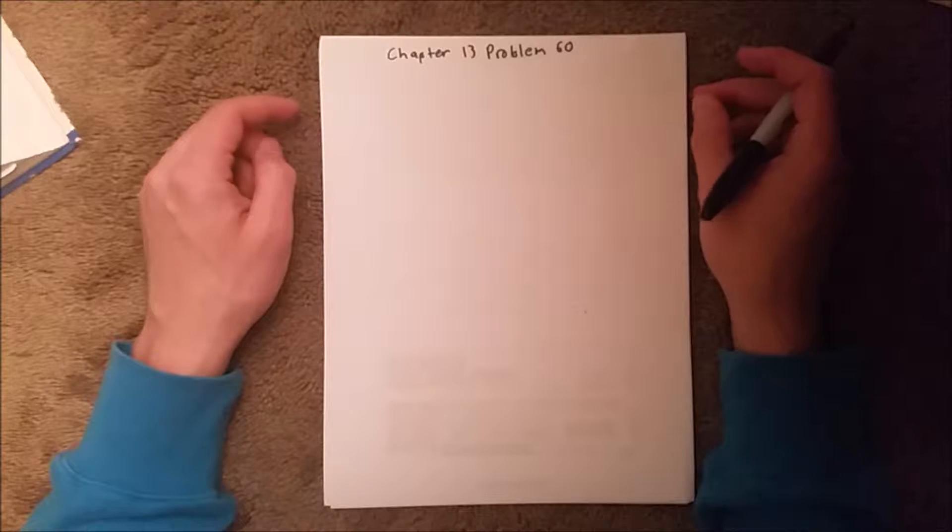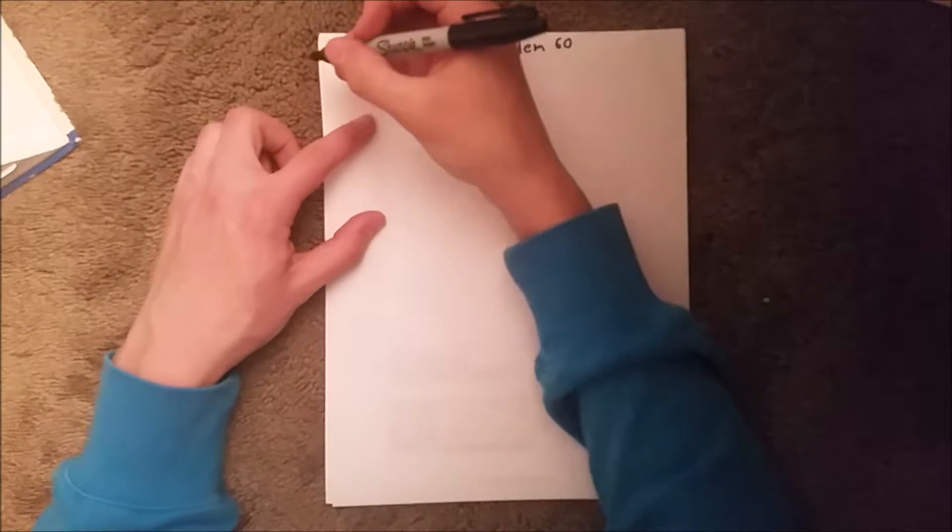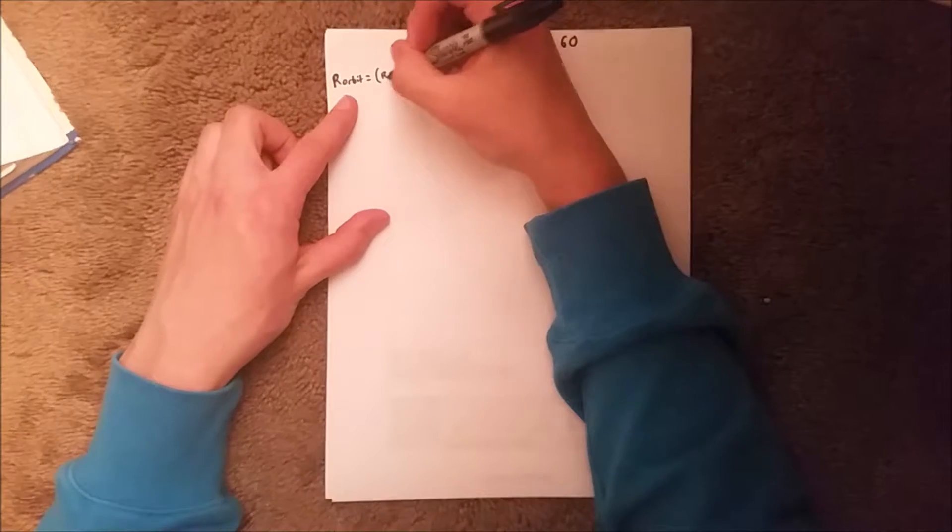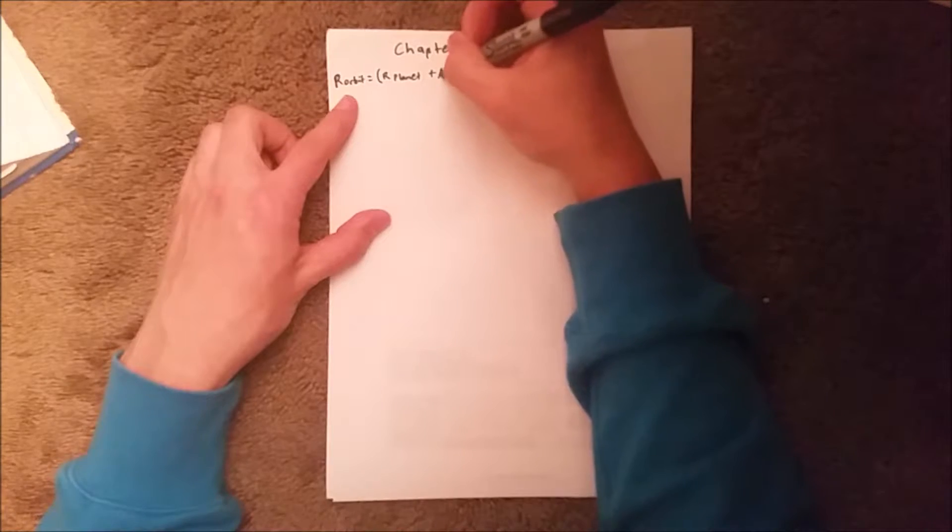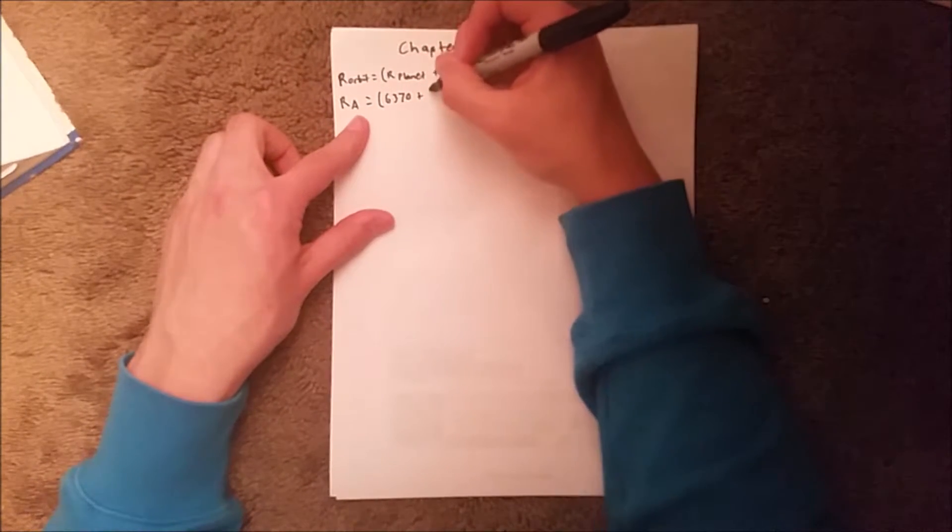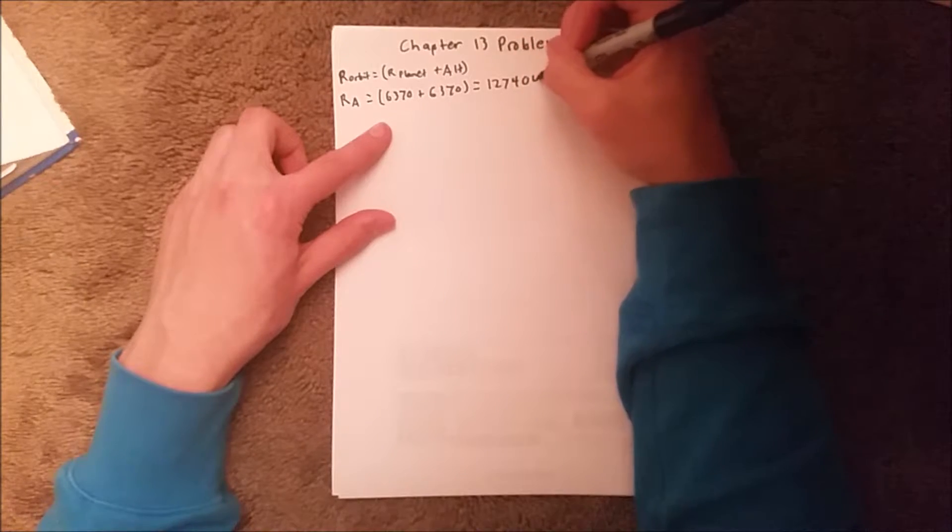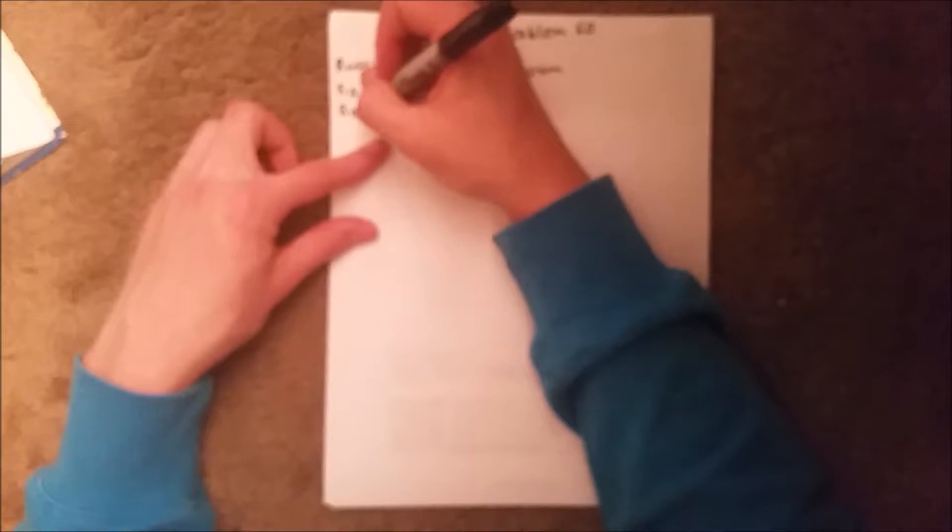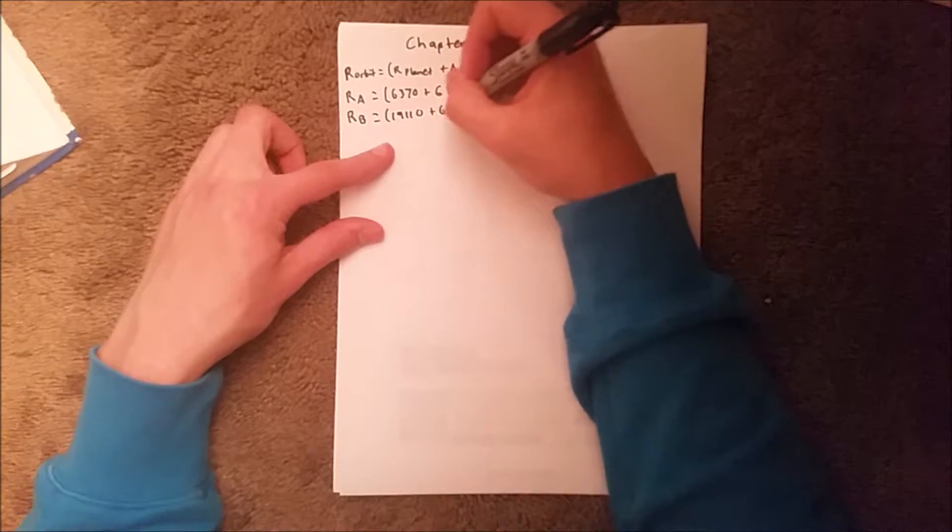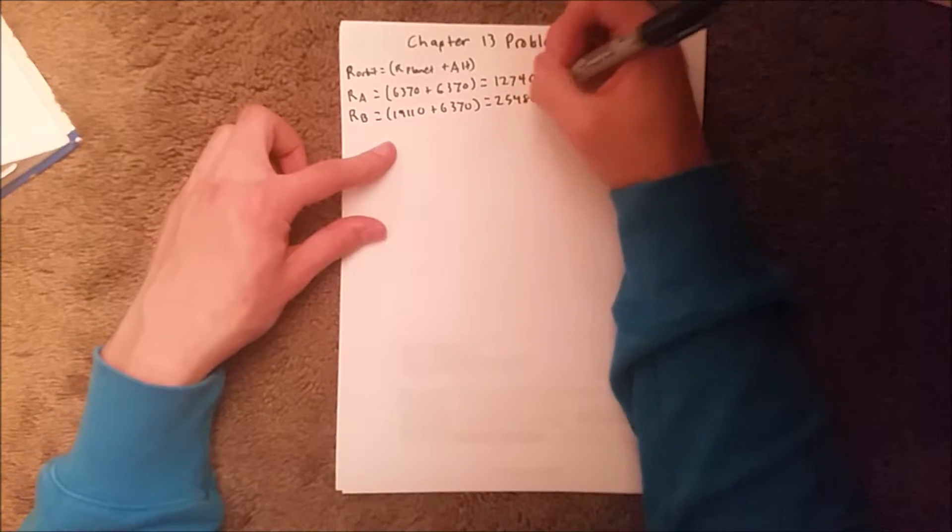One thing we need to do first is, since it gives us the altitude, we need to calculate the radius of orbit, which is the radius of the planet plus the altitude. So the radius of A will be 6,370 plus 6,370, which equals 12,740 kilometers. And we're going to do the same thing for radius B, which is 19,110 plus 6,370, and that is equal to 25,480 kilometers.